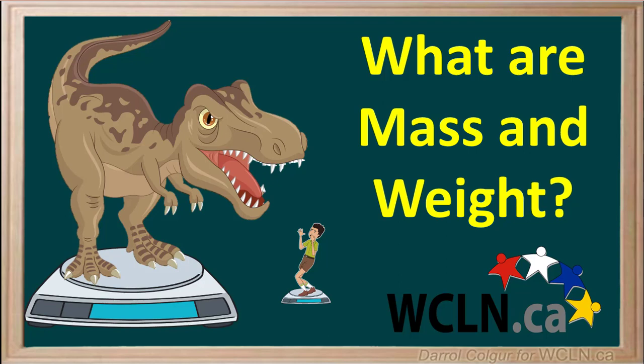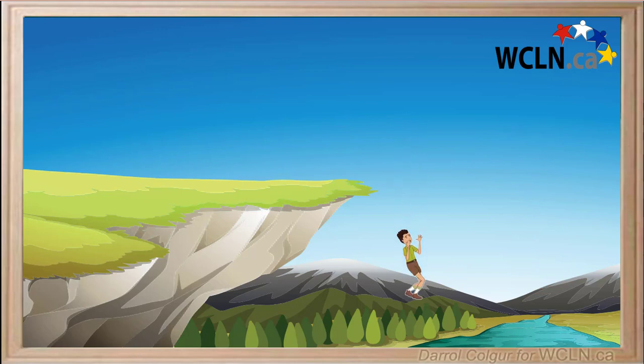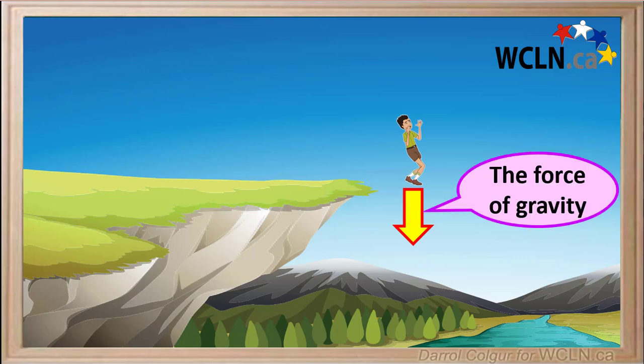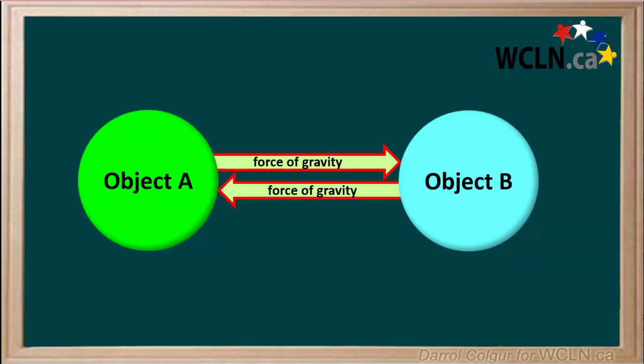We often hear about mass and weight, but what are they exactly? We're all aware that there is something that pulls us downward. But what is this something? It is what we call the force of gravity. Gravity is an attractive force that is exerted between any two objects that have mass. The larger the masses of the objects, the stronger the force of gravity.